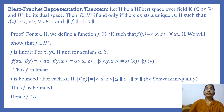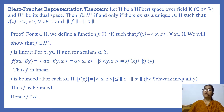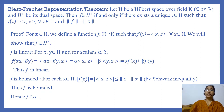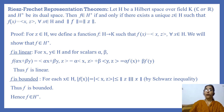Then F belongs to H star if and only if there exists a unique Z in H such that F of X is equal to the inner product ⟨X, Z⟩ for every X in H, and the norm of F is equal to the norm of Z. Let us prove this theorem.